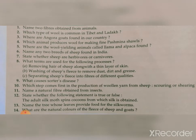Question twelve: State whether the following statement is true or false — 'The adult silk moth spins cocoons from which silk is obtained.' The answer is false. It is not the adult silk moth — it is the larva that spins the cocoon.